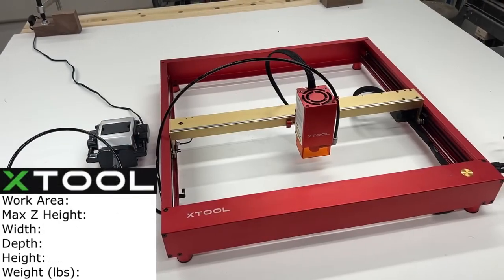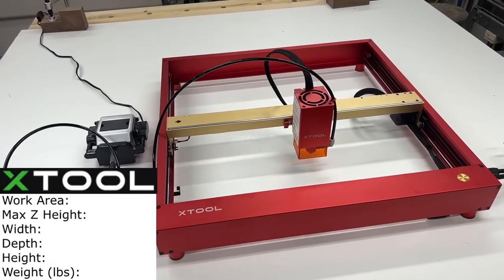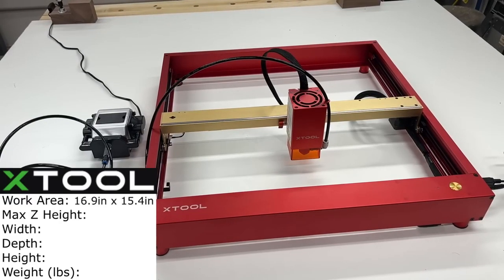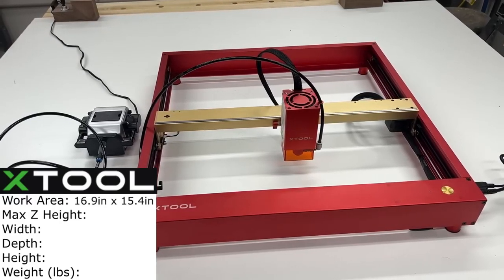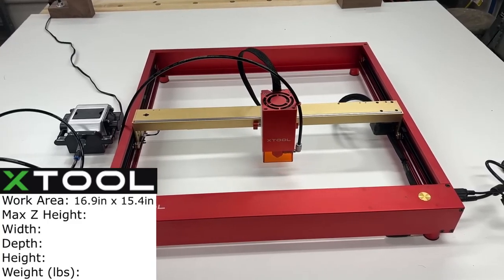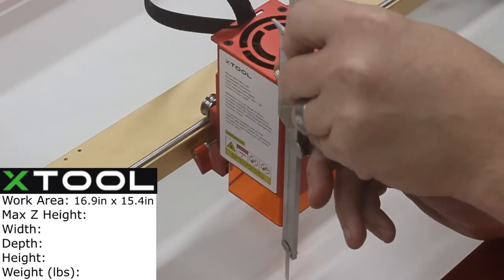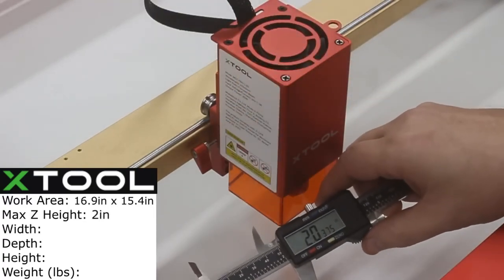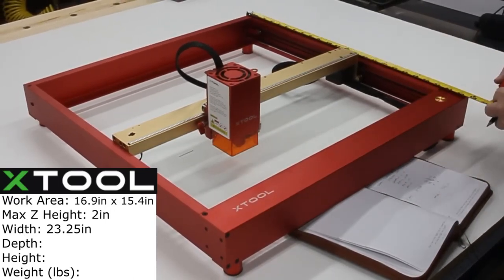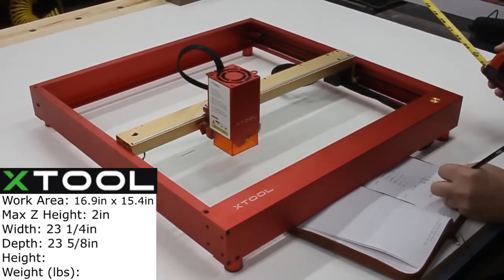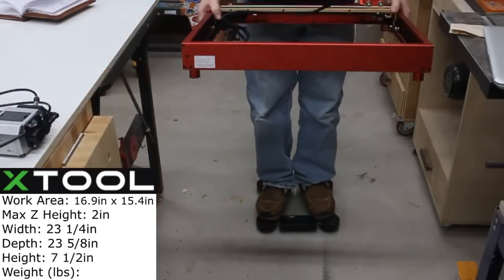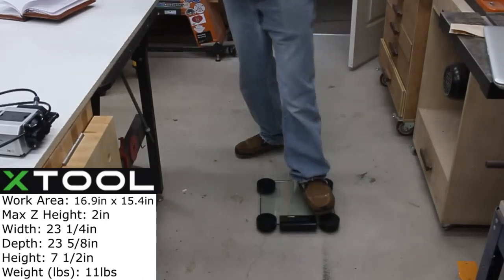Alright, let's see how this compares to the X tool. The total work area for this machine is just a bit smaller than the other one. It's 16.9 by 15.4. That works out to be 430 by 390 millimeters. The max Z height is just 2 inches. The width comes in at 23 1⁄4. The depth at 23 5⁄8. And the overall height is just 7 1⁄2 inches. And on the scale, the X tool weighed in at 11 pounds.